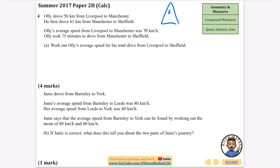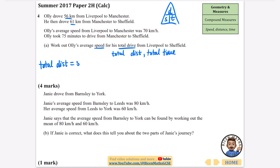The key thing we're going to use with speed, distance and time is our distance-speed-time triangle. The question says: Ollie drove 56 kilometres from Liverpool to Manchester, then 61 kilometres from Manchester to Sheffield. His average speed from Liverpool to Manchester was 70 km/h. We need the total distance and total time. The total distance is 56 plus 61, which is 117 kilometres.